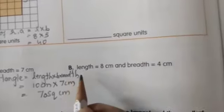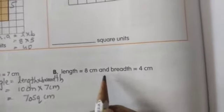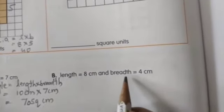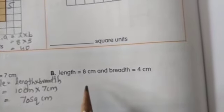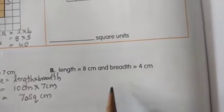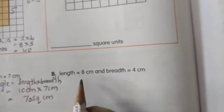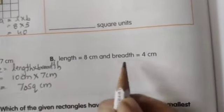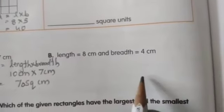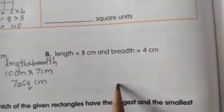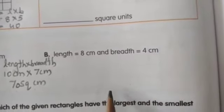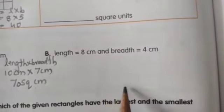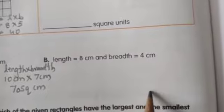Now part B: length is equal to 8 cm and breadth is equal to 4 cm. First write the formula, substitute the values — 8 cm for length and 4 cm for breadth — multiply 8 into 4, and write the answer in square cm.